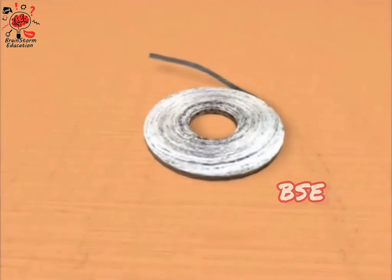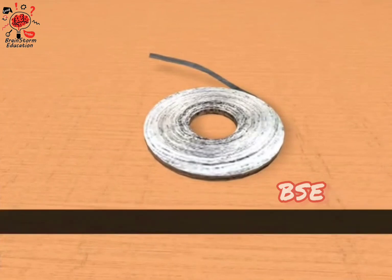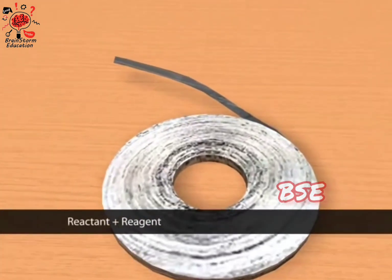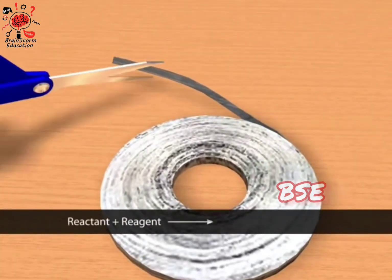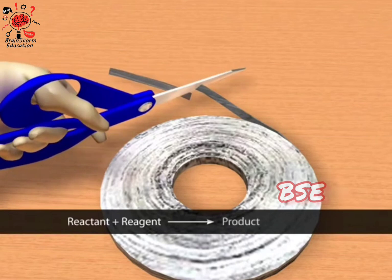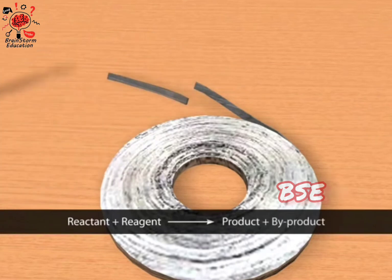In a chemical reaction, a reactant and a reagent combine to form a simple new product and a by-product.